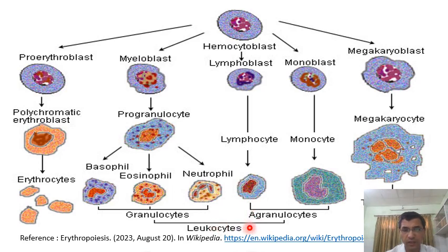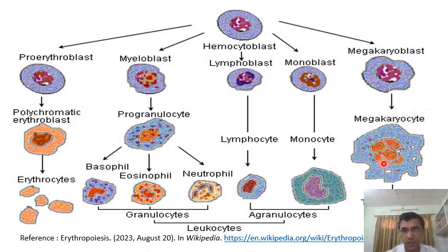The megakaryoblasts then differentiate into megakaryocytes. With the help of some mitotic divisions or mitogens, these megakaryocytes ultimately produce platelets. These platelets play an important role in blood clotting mechanisms.